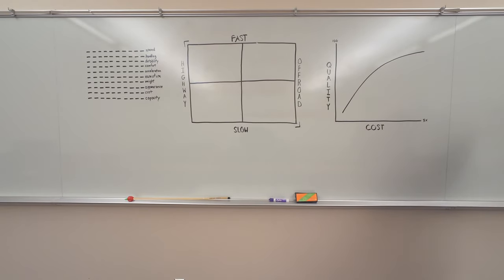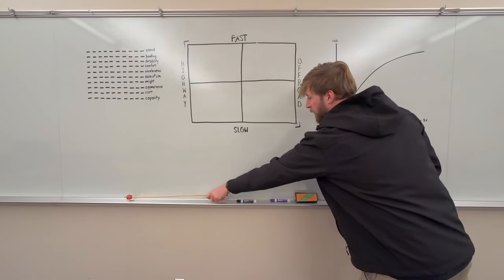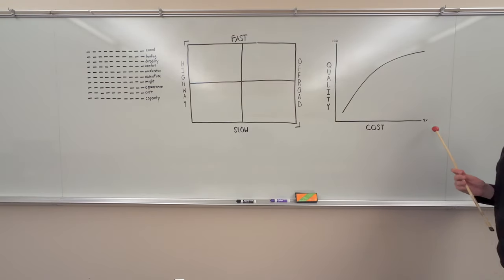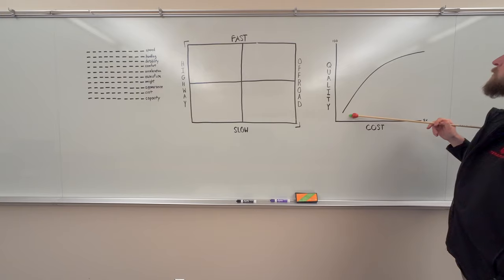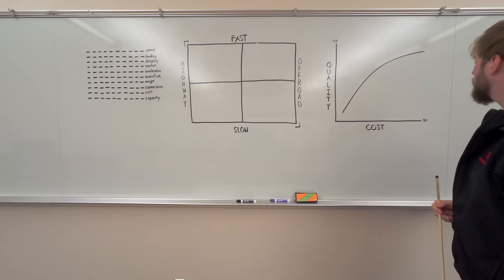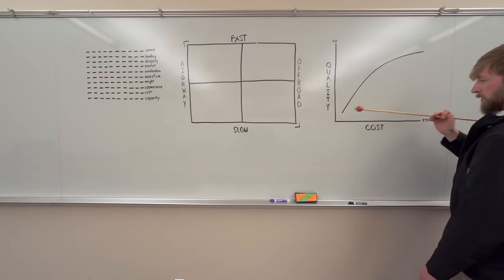First thing to factor and consider is budget. How much are you willing to spend? The more you're willing to spend, the more quality you get. Typically though, when it comes to vehicles and most things, the more you spend, the better it gets at a curve about like this. So let's say for example, our budget is $15,000, which is here.